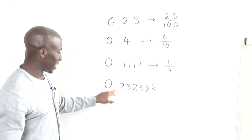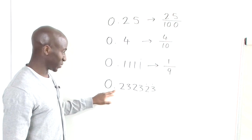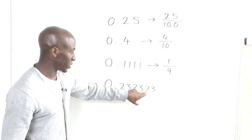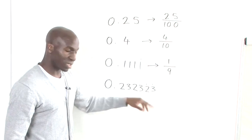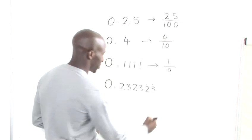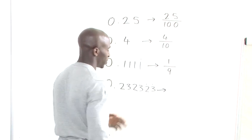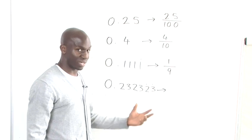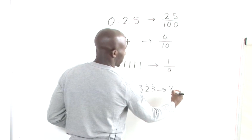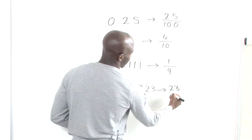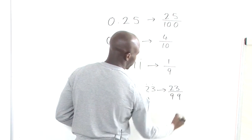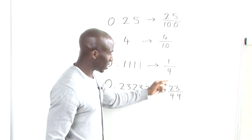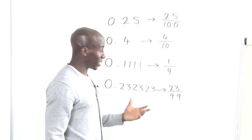With this particular decimal, we have two repeated terms: 2 and 3, always recurring. To convert this into a fraction, we use two nines — so 99. We take 23, which is the repeated term, and simply divide it by 99. We can stop there because 23 and 99 share no further common factors.